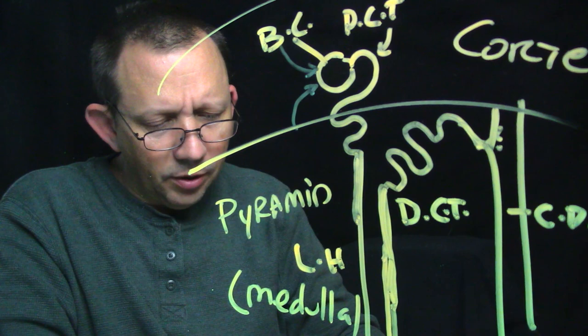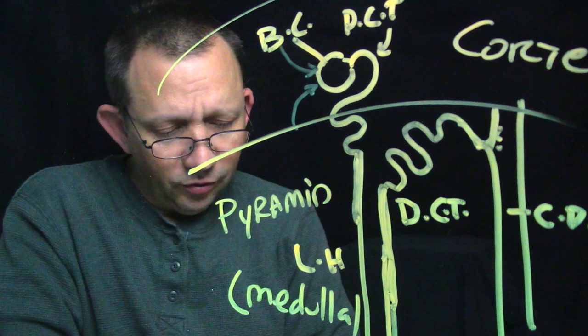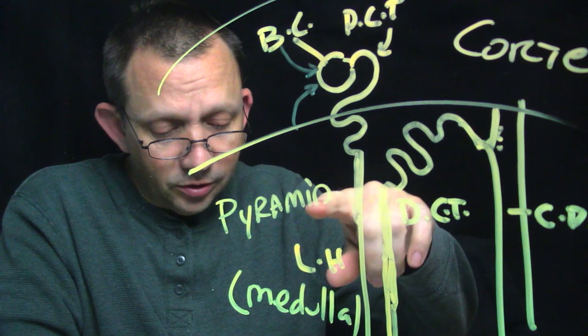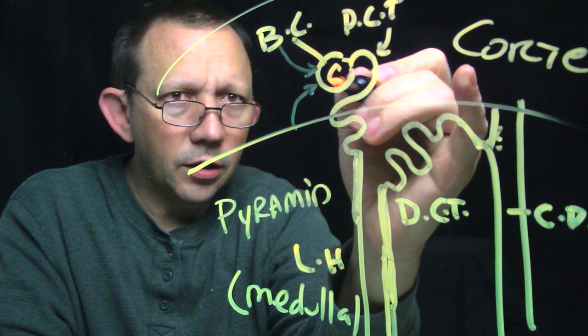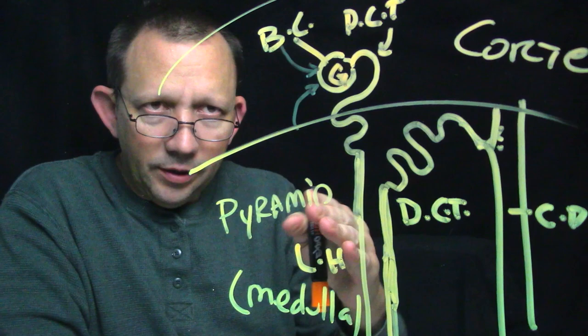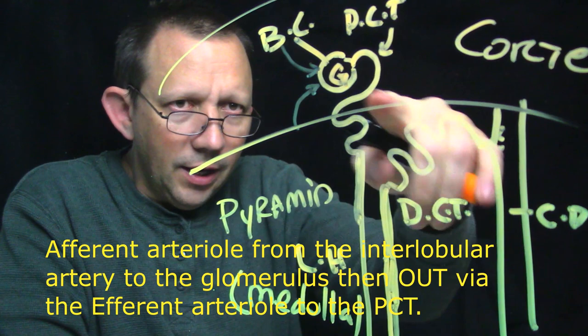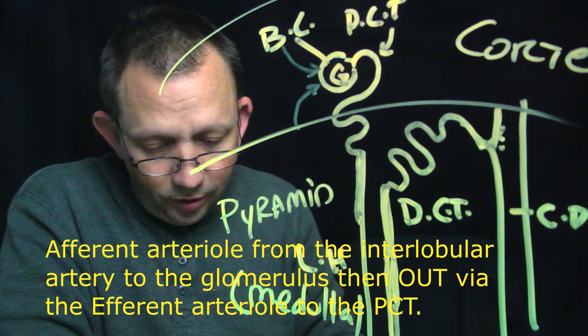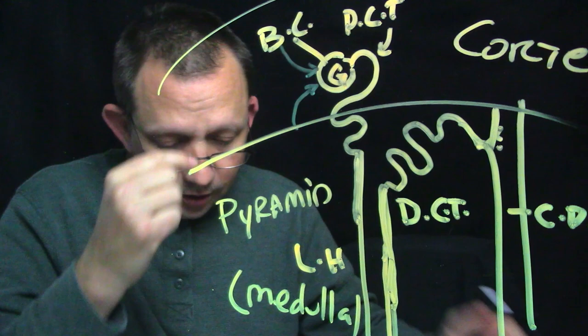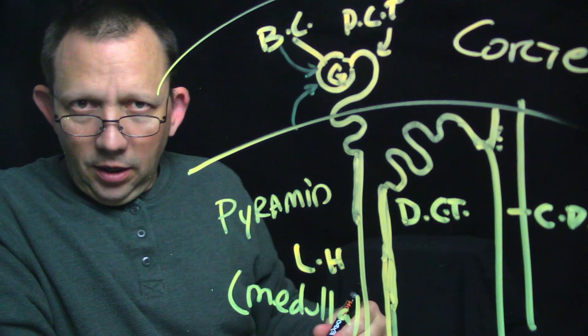Let's see — renal corpuscles, Bowman's capsule, podocytes, and the glomerulus. From the renal capsule, filtrate and filtered fluid goes to the renal tubule. The glomerulus is inside here — it's just the capillaries that come in from the efferent arterioles — and then the arterioles come out and wrap around these guys, which we talked about before. Descending loop of Henle — this is a way-back-machine moment for you guys from anatomy.